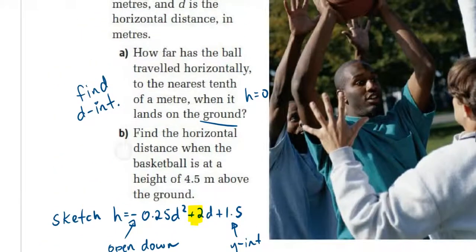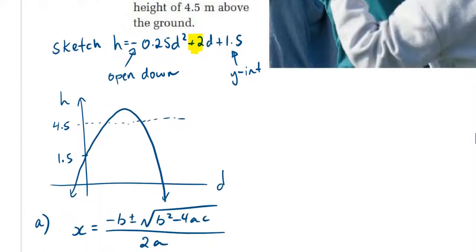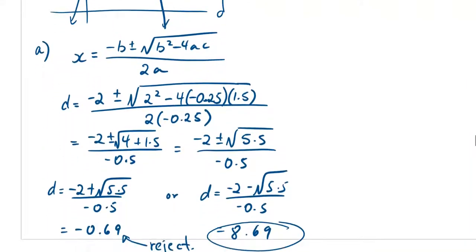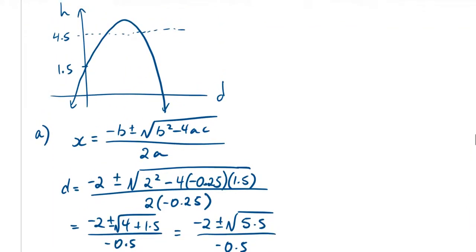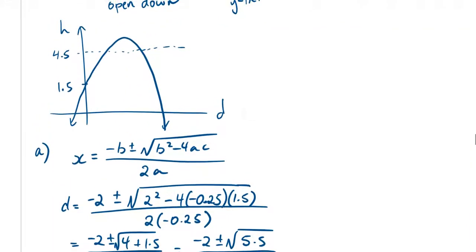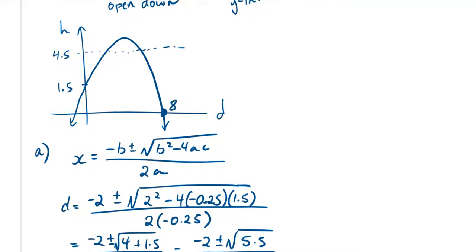The ball has traveled 8.69 meters horizontally when it lands on the ground — that is our d-intercept at 8.69 meters.